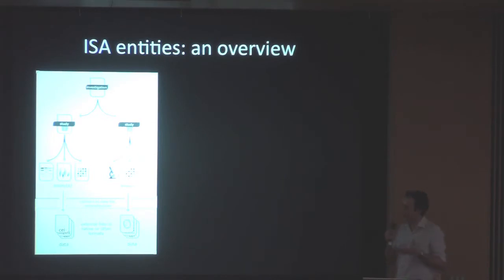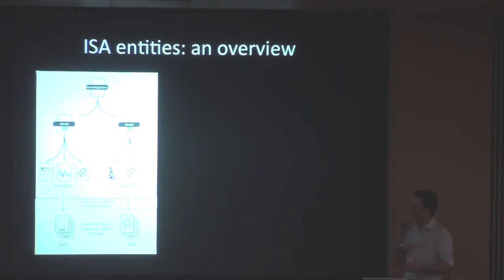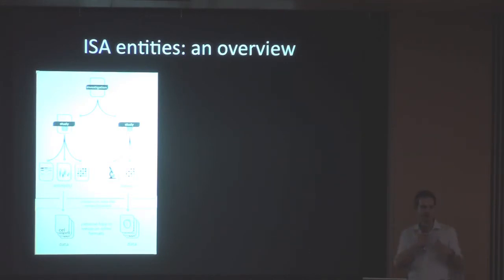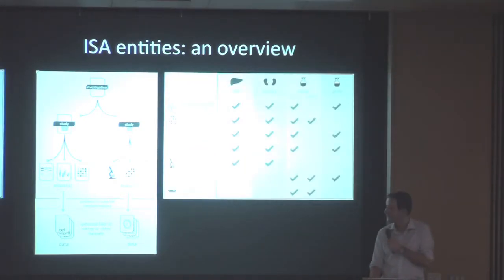Right now, most repositories are established by technique, specifically centered on micro-arrays. So if people want to deposit this kind of data in public repositories, they have to represent the information two or three times — the information about experimental design, the variables, and things like that. And we thought maybe there could be a better way to do that.